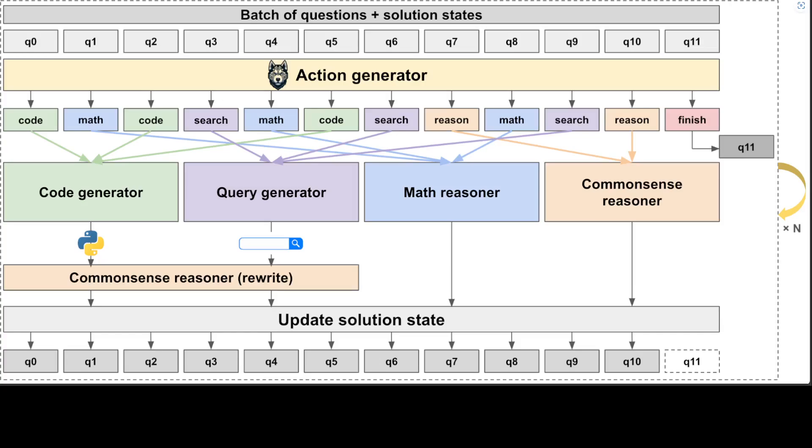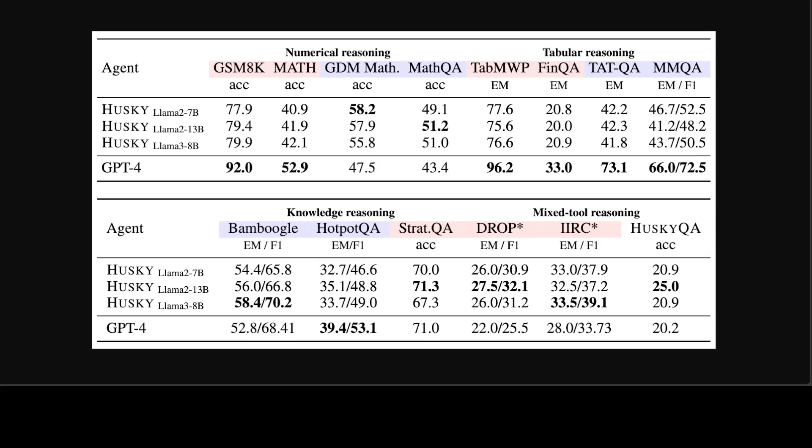So that is what they are doing here. They have also released some of the benchmarking. For example, they have compared it with GPT-4, and by the way this is GPT-4 0125 preview for all tasks except GSM 8K and MATH.